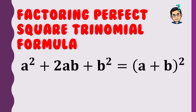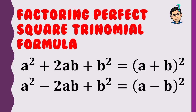In factoring a perfect square trinomial, the formula is: a² + 2ab + b² = (a + b)². How this works: extract the square root of the first term a², which gives a; follow the sign of the middle term — so plus becomes plus; then the square root of the last term b², which gives b. Remember, there are only two forms: one with plus and one with minus.